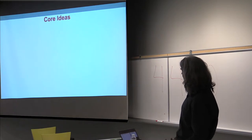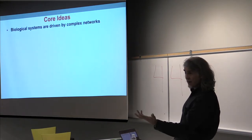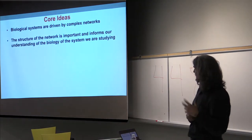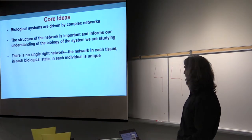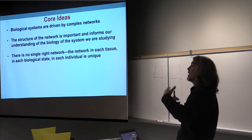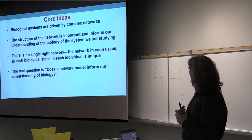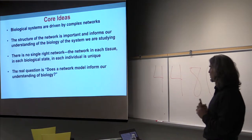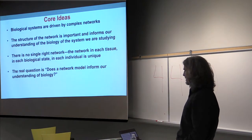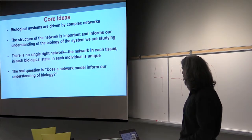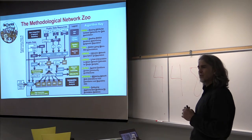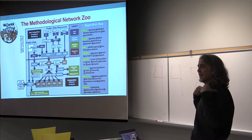The core ideas are that biological systems are driven by complex networks — it's why things like Watson are hard to do. The structure of the network informs our understanding of the system we're studying, and there's no single right network. The network in each tissue, in each biological state, in you and in me are different, and that helps explain our phenotype. The question, going back to George Box, is: does the model inform our understanding of the system?